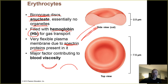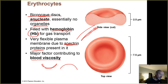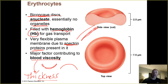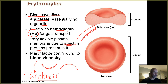Your erythrocytes make up on average about 45% of your blood volume, and so they are the major factor that contributes to your blood viscosity — your blood thickness. That means if you have more erythrocytes in your blood than you're supposed to, your blood is going to be thicker than it's supposed to. If you have fewer, it will be thinner than it's supposed to.